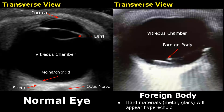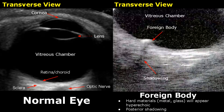Ultrasound is helpful in visualizing ocular foreign bodies. Hard materials such as glass or metal will appear hyperechoic, and denser material will have posterior acoustic shadowing, as seen here behind the object.